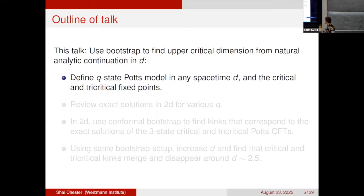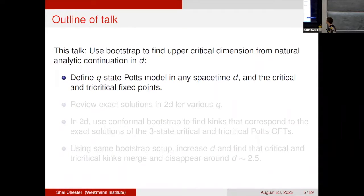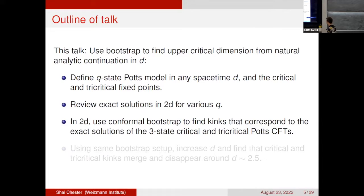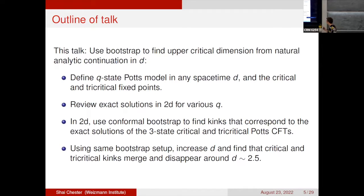In this talk, the bootstrap will be used to find the upper critical dimension from a natural analytic continuation in d. First, the q-state Potts model will be defined in any spacetime dimension d, along with the critical and tricritical fixed points. Then exact solutions in two dimensions will be reviewed for various values of q. In 2D, the conformal bootstrap will be used to find kinks corresponding to the exact solution of the three-state critical and tricritical Potts CFTs, and then the same bootstrap setup will be extended to larger d, with the critical and tricritical kinks expected to merge and disappear at around d equals 2.5.